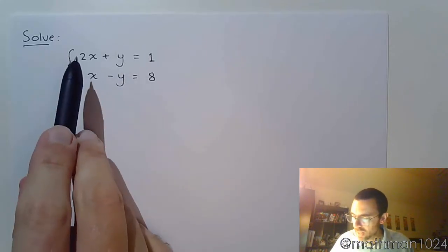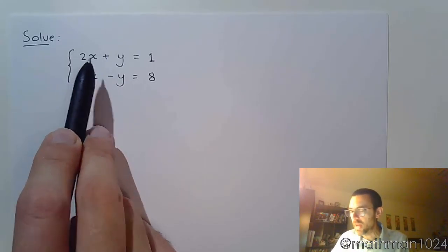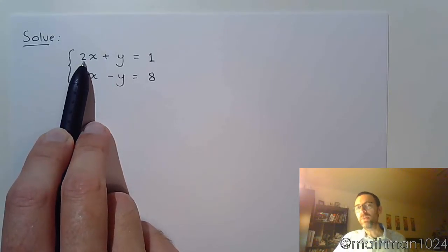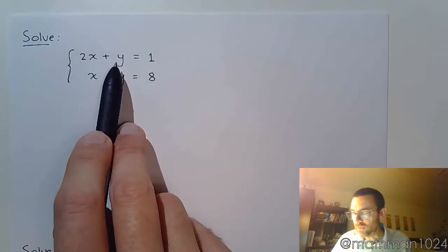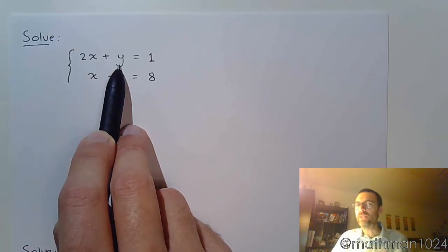For example, if I look here I can solve this equation for X, but in order to do so I have to subtract the Y and then I would have to divide by 2. Dividing by 2 is going to cause me to have fractions, which is not going to be the best thing for us. I could solve it for Y, in which case I just have to move the 2X to the other side. It's a simple step. Just subtract 2X and you're going to be fine.